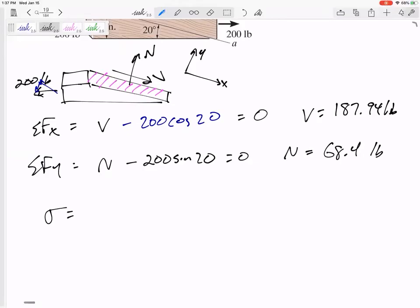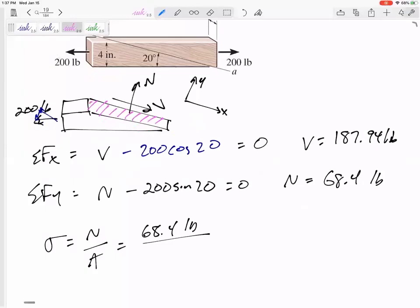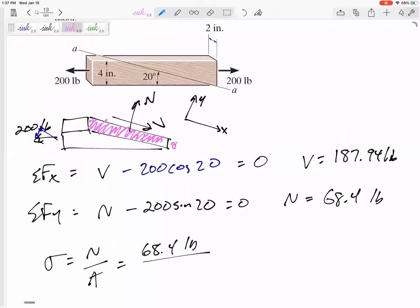But the area that it's acting, 68.4 pounds, what area is it acting? It's acting over this area right here, which is really just a rectangle. It has two inches as its base, and it has this length right here as its hypotenuse. It has that inch, that four inches right there.